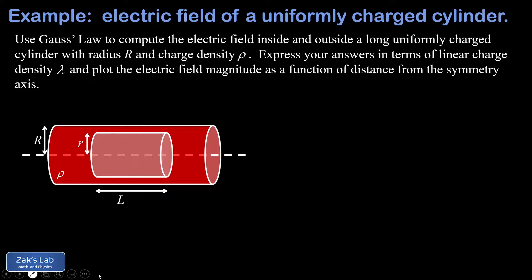We start by looking inside the cylinder. There's our Gaussian surface: a closed cylinder of variable radius little r and length L, where little r is less than big R, the radius of the cylinder. This Gaussian surface was defined in a way that shares the symmetry of the charge distribution we're studying. The consequence of that symmetry is that the electric field is always perpendicular to the curved surface of our Gaussian cylinder, and the field magnitude is constant along that curved surface since the entire surface lies at exactly the same distance from the symmetry axis. We need E to be perpendicular to the surface and constant in magnitude — this is what makes Gauss's law useful.